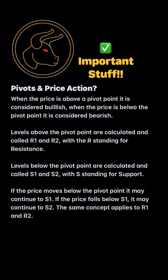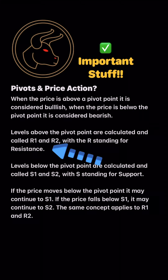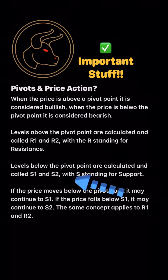Now this is the real important stuff, so I need you to pay attention — pivots and price action. When the price is above a pivot point, it is considered bullish. When a price is below the pivot point, it's considered bearish. Levels above the pivot point are calculated and called R1 and R2, with the R standing for resistance. Levels below the pivot point are calculated and called S1 and S2, with the S standing for support.